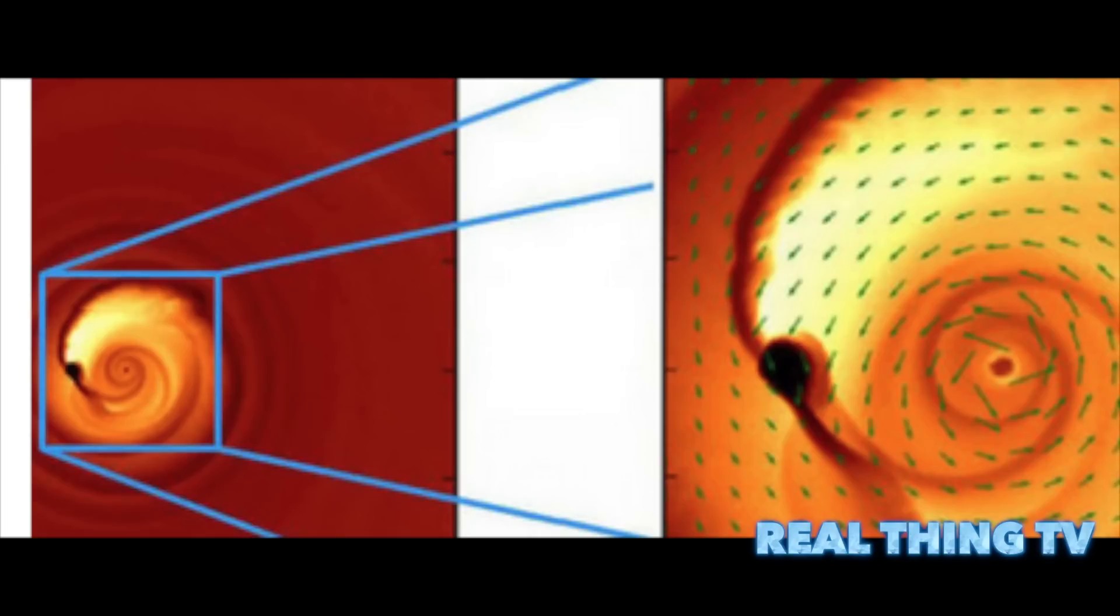A new study published in Nature found more evidence to support and confirm the close-knit dance of these black holes. Using ultraviolet data from GALEX and Hubble, they were able to track the system's changing light patterns over the past 20 years.